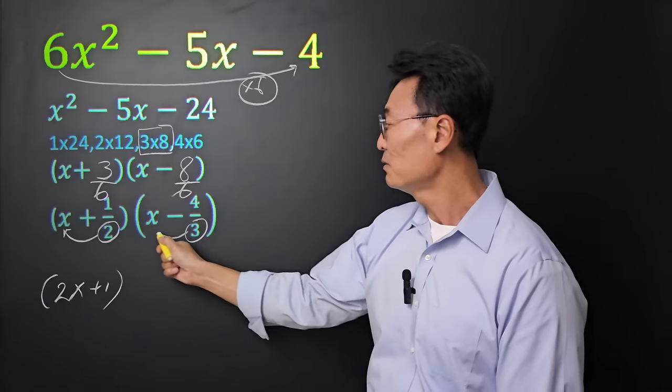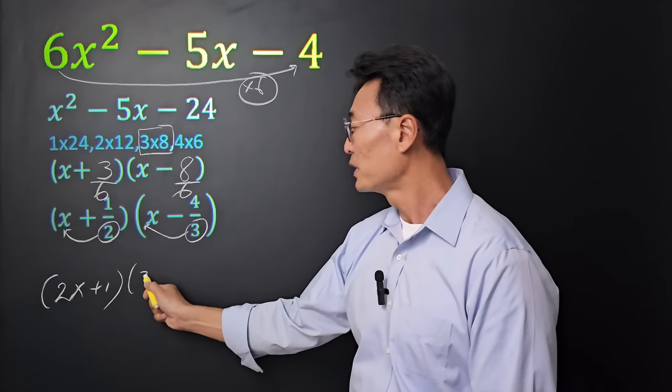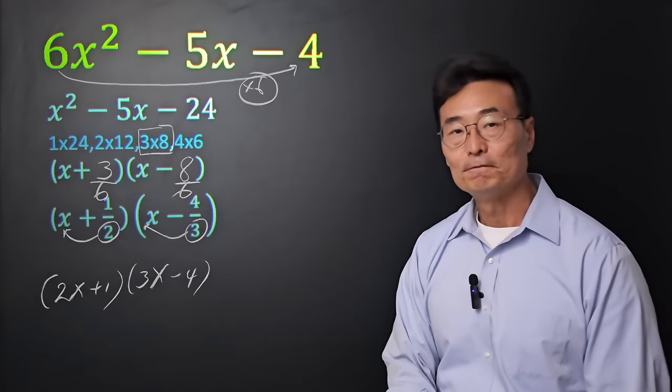Again, we're going to take that 3, tack it on to the x, or multiply, where we get 3x minus 4.